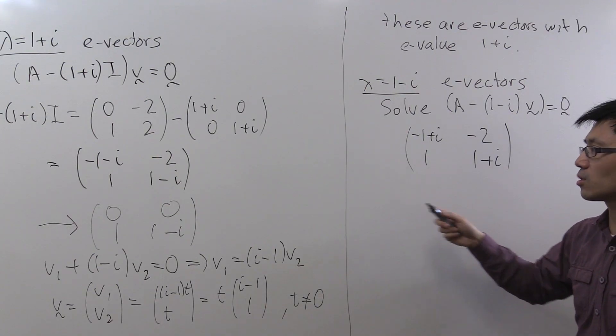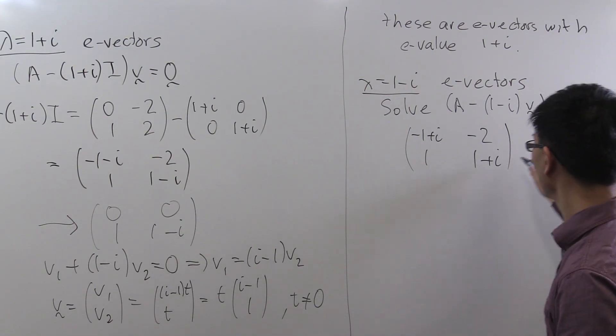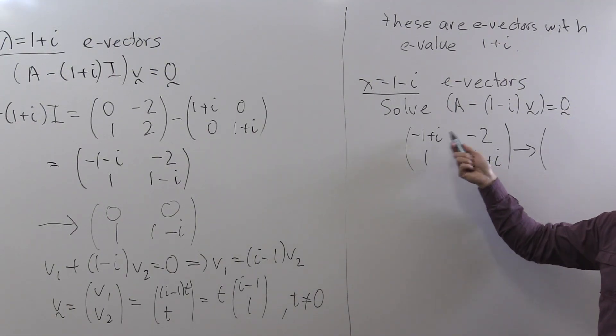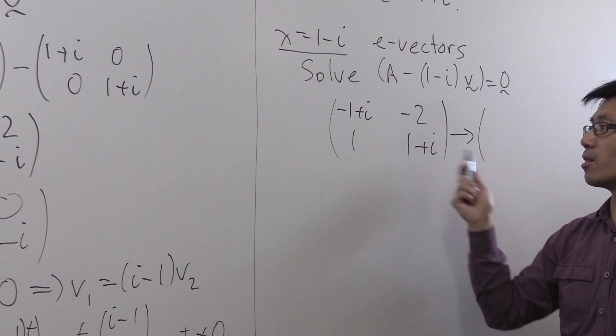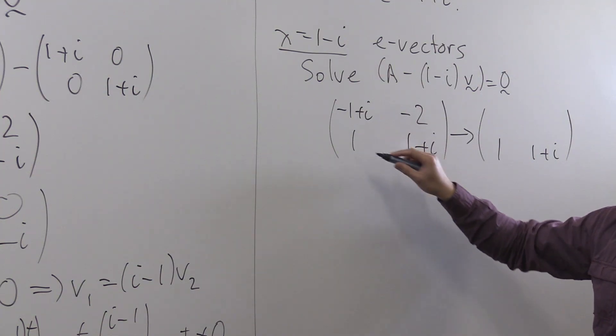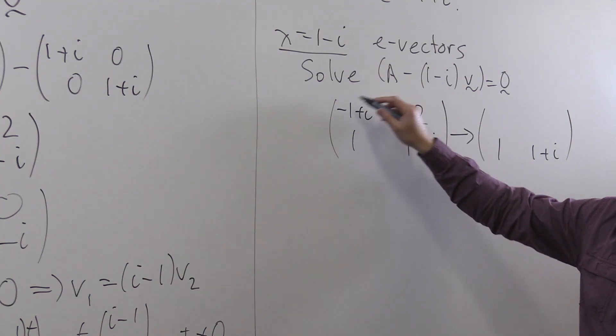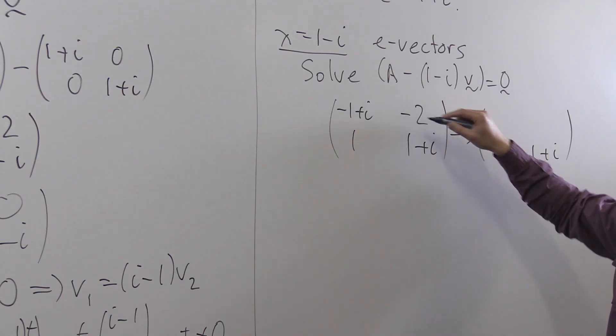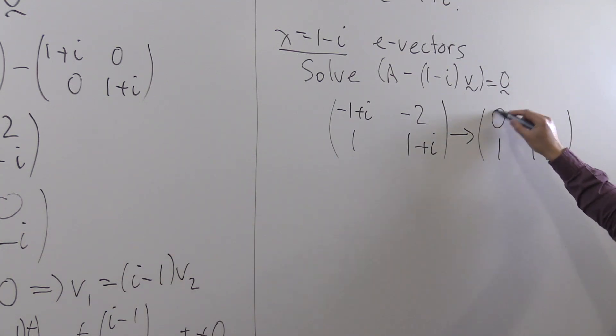And again, we have to solve this, so we have to do Gaussian elimination as we did before. And again, it's a little bit easier to make this row 0 rather than the bottom row. So 1 plus i here. If you multiply this by 1 minus i, you get the negative of this. If you multiply this by 1 minus i, you get 2, which is the negative of this. So adding 1 minus i times the bottom row to the top gives you 0, 0 here.